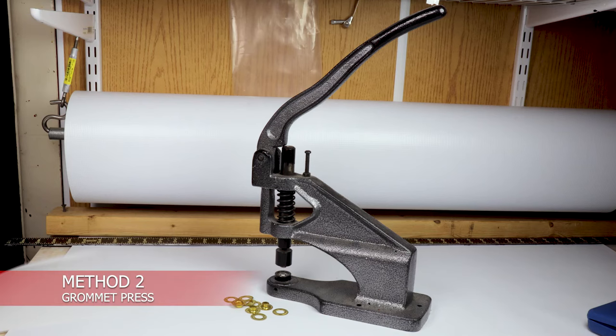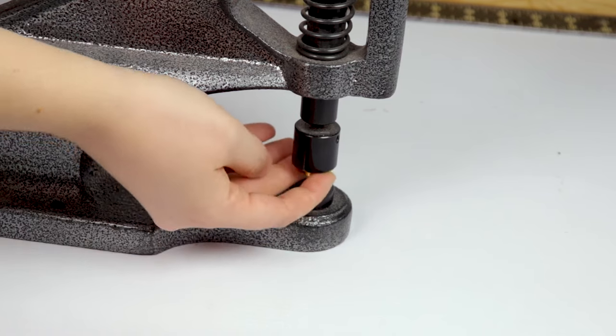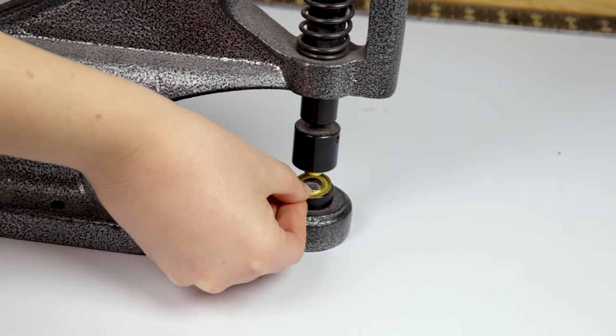Method two: grommet press. The tools needed in this method include a grommet press and grommets. Take both parts of the grommet and insert them into the grommet press. The grommet on top and washer on the bottom.